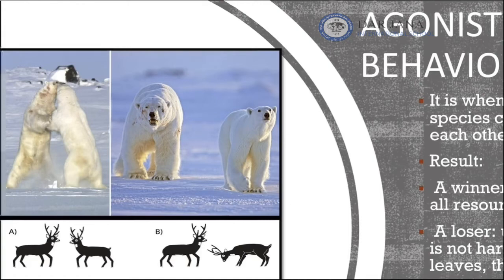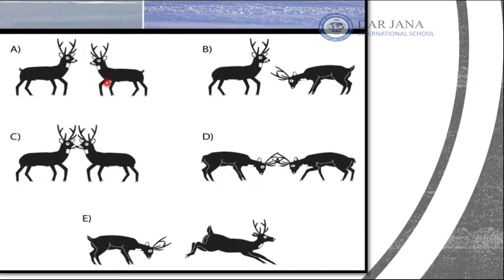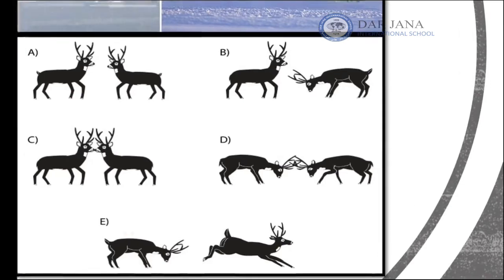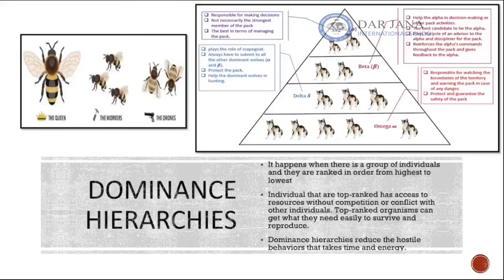A similar example is shown between sheep and deer. This kind of behavior appears in most individuals of the same species. At the end, one animal moves away as the loser, giving control to the winner, who gains access to reproduce and benefit from all available resources such as food and water.